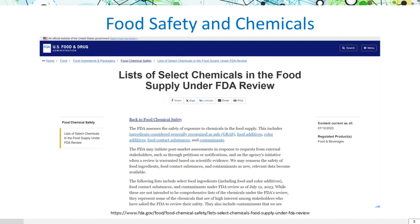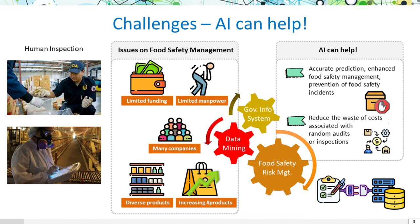Indeed, the FDA has evaluated the safety of chemical exposure within our food supply. This evaluation encompasses ingredients deemed generally recognized as safe, along with food additives and contaminants. This highlights the urgent need for effective methods to detect illicit food factories based on their use of chemicals.